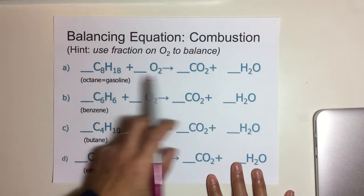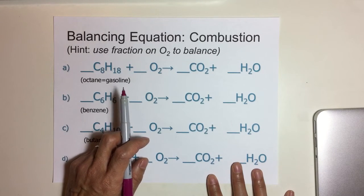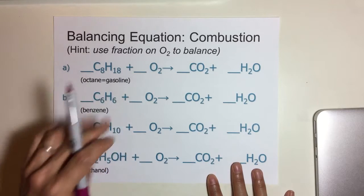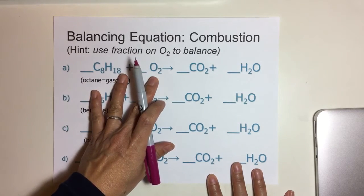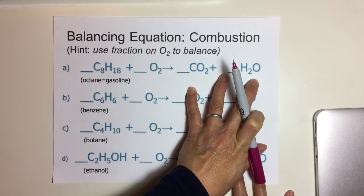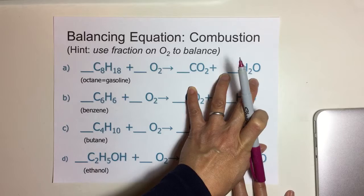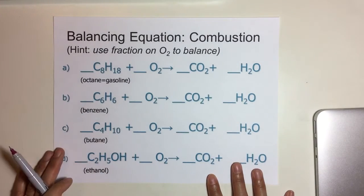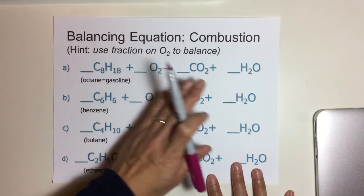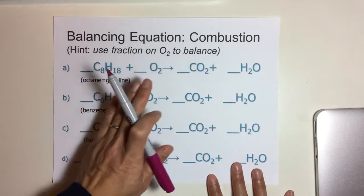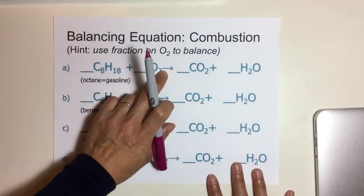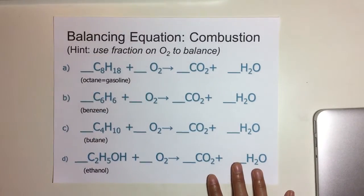The idea behind balancing equations is to adhere to the law of conservation of mass. Mass has to be conserved. Whatever you have on this side of a given element must be the same as what you have on this side, which is the product side of the reaction. So you have to count and make sure that you have equal numbers of carbons, hydrogens, and oxygens on both sides of this reaction separated by this arrow sign.